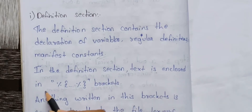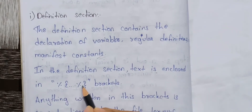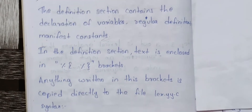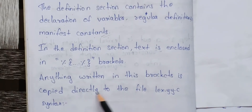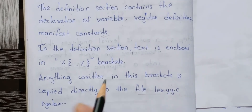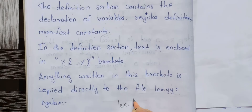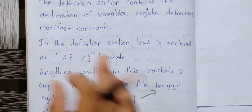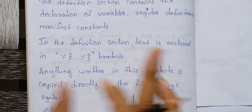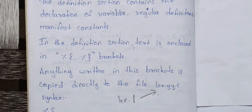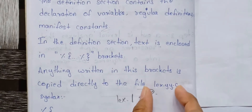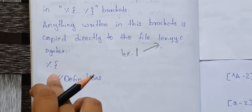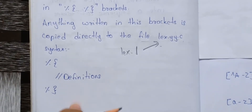In the Definition section, the text is enclosed in percentage open flower bracket and percentage closed flower bracket — that is, %{ and %}. Anything written inside these brackets is copied directly to the output file lex.yy.c. So this section is essentially a copy-paste — there is no change. The syntax is written inside %{ definitions %}.